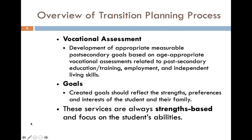An overview of the transition planning process includes a few separate, very important pieces. One is a vocational assessment in which we develop appropriate measurable post-secondary goals that are based on age-appropriate vocational assessments related to post-secondary education and training, employment, and independent living skills. From there, we take that information and create goals that should reflect the strengths, preferences, and interests of the student along with input from their family.